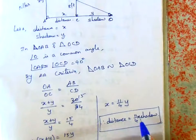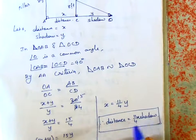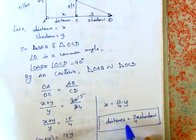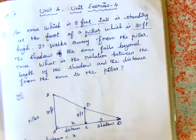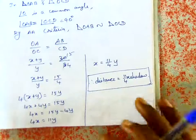Distance equals 11/4 shadow. This is the relation. Okay students, any doubt? Instant explanation. Thank you.